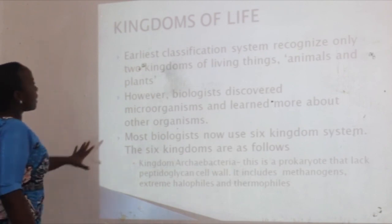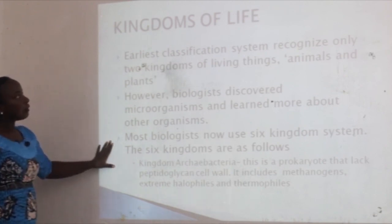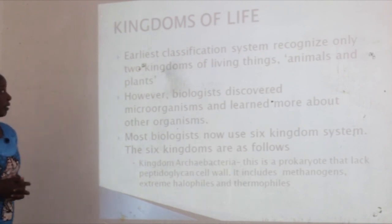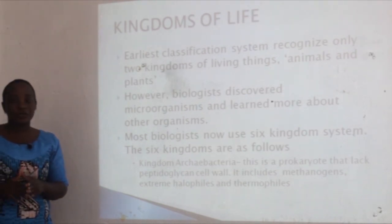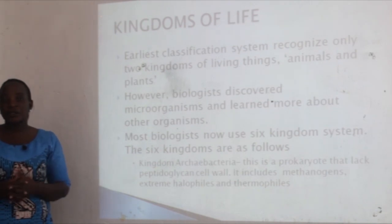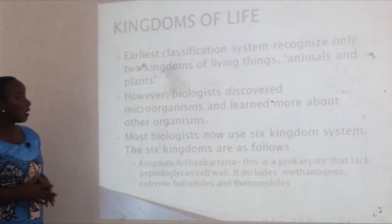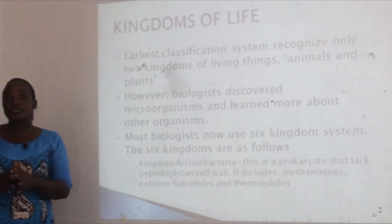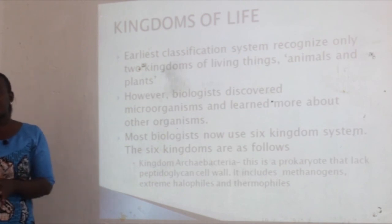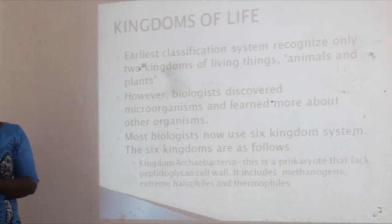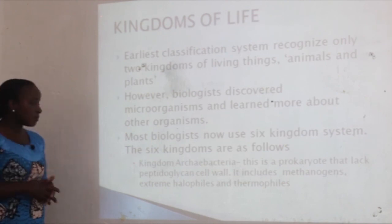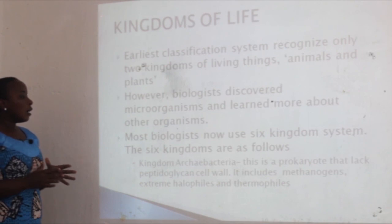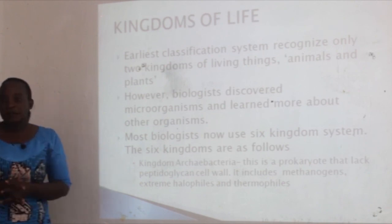We now move to the kingdoms of life. The earliest classification system recognized only two kingdoms of living things: animals and plants. However, biologists discovered other organisms — the microorganisms — and learned more about them. Most biologists now use a six-kingdom system.